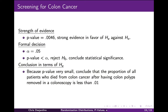Going back to the screening for colon cancer example, we calculated a p-value of 0.0018. This is very strong evidence against the null hypothesis and in favor of the alternative. With alpha set to 0.05, the p-value is less than alpha, so we reject the null hypothesis and conclude that the proportion of all patients who died from colon cancer after having colon polyps removed in a colonoscopy is less than 0.01.